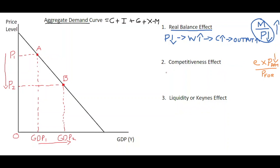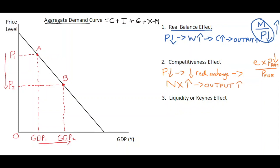In our economy the price level has dropped, which reduces the real exchange rate. Because it depreciates the real exchange rate, this has a knock-on impact on net exports. If your real exchange rate depreciates, all of your exports are cheaper, meaning you export more and your net exports will rise. If your net exports rise, your output level rises as well, and therefore expenditure on output increases. So again, when prices drop, spending on output increases.